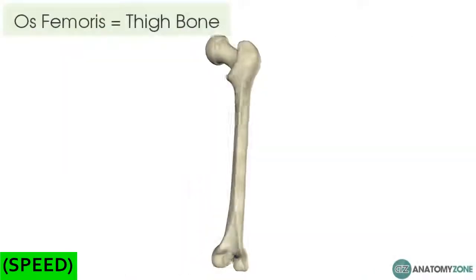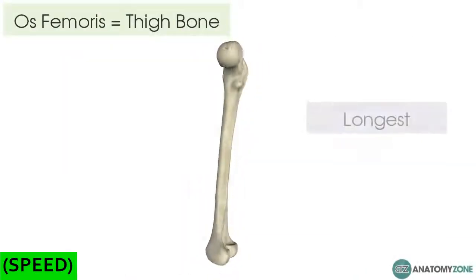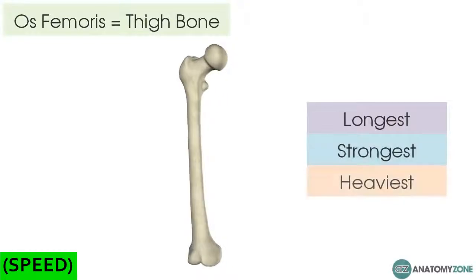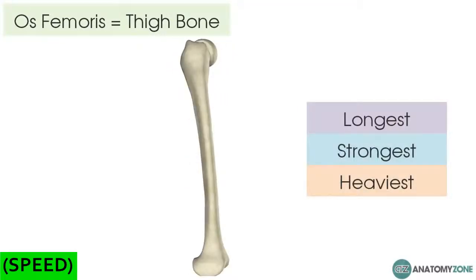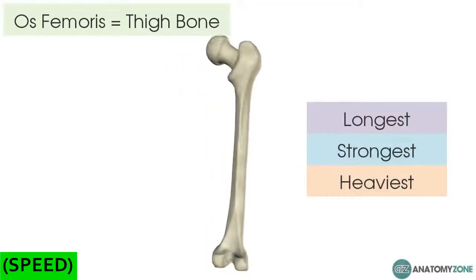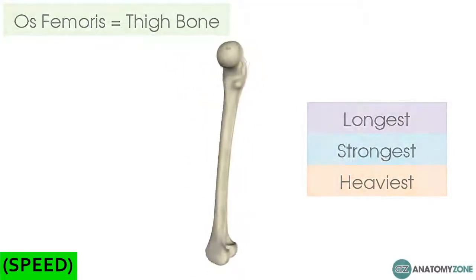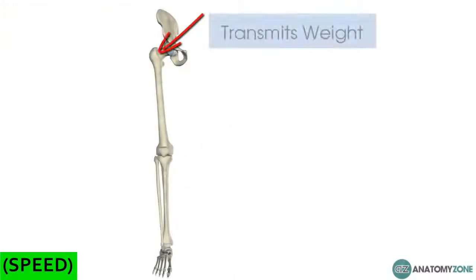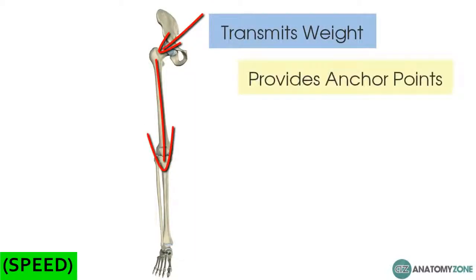Femur comes from the Latin os femoris, which means thigh bone. It's the longest, strongest, and heaviest bone in our body, accounting for about a quarter of your height and it's stronger than concrete. It functions to transmit weight from your hip bone to your tibia and provides anchor points for over a dozen different muscles, allowing us to move our lower limbs.